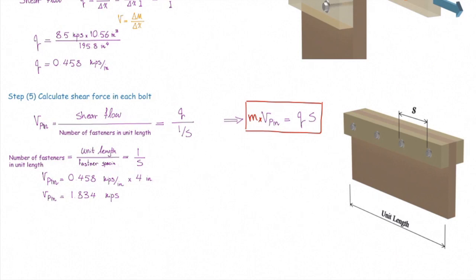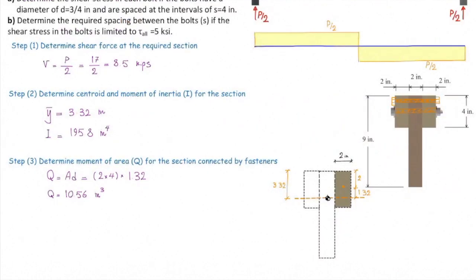Now for Part B: determine the spacing between the bolts if the maximum shear stress is limited to 5 ksi. The spacing S is now unknown. Steps 1 through 4 remain unchanged — shear force, section properties, Q, and shear flow all stay the same.